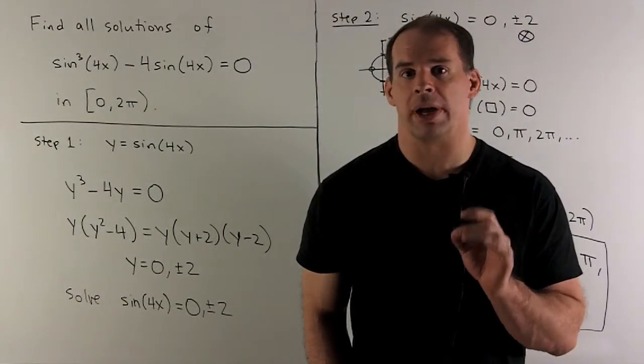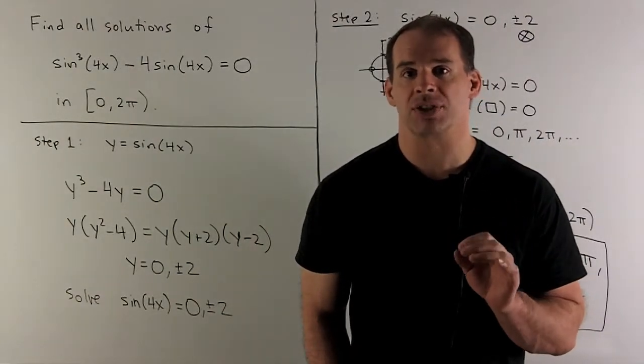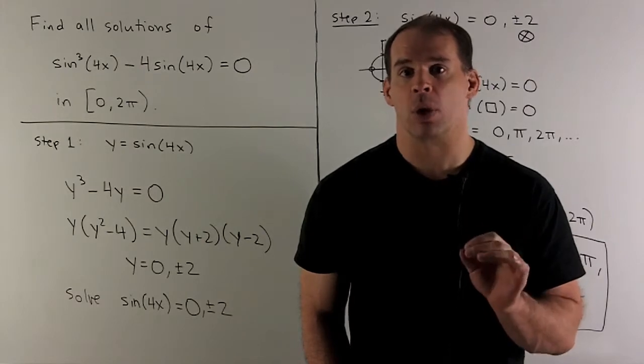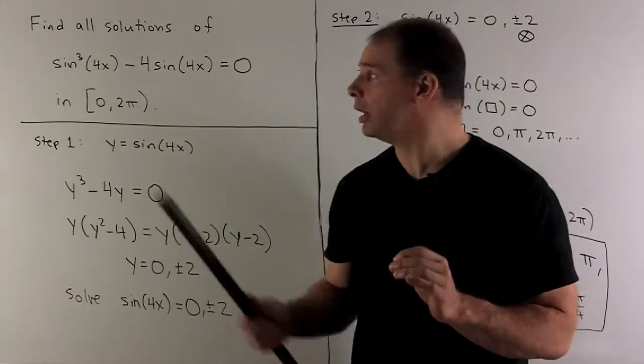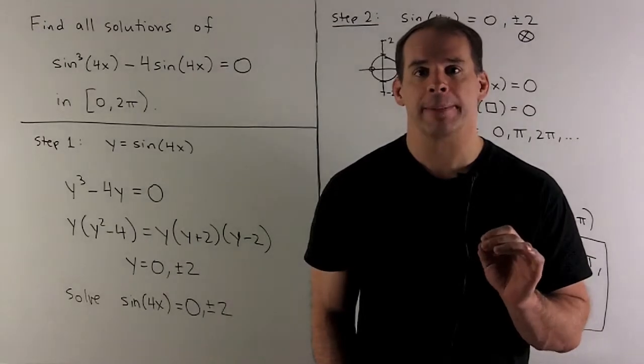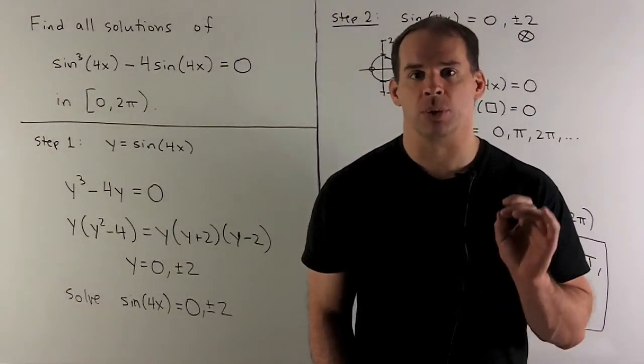Find all solutions to the trig equation sin³(4x) - 4sin(4x) = 0 in the interval [0, 2π), including 0 but excluding 2π.